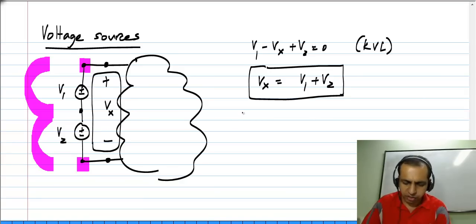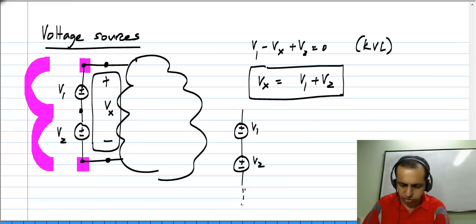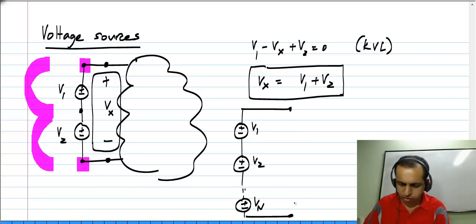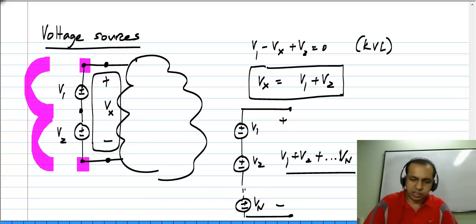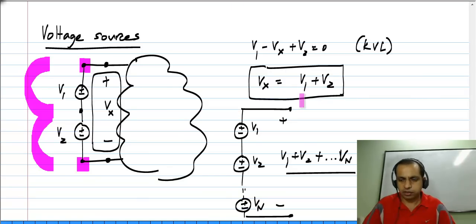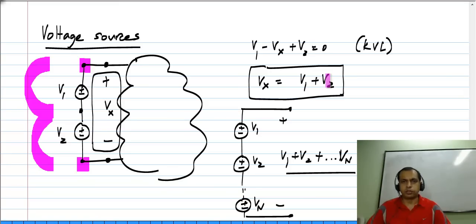In general, if you have a number of voltage sources in series, V 1, V 2, all the way to V n, the net voltage is V 1 plus V 2 plus all the way to V n. A series connection of voltage sources behaves like an equivalent voltage source because V x is a fixed value — it does not depend on the current. So if you have a number of voltage sources in series, the result is also an independent voltage source whose value is the sum of all the individual voltage source values.